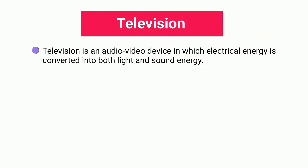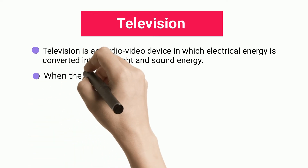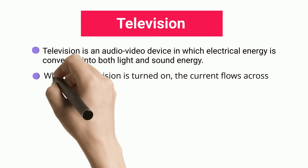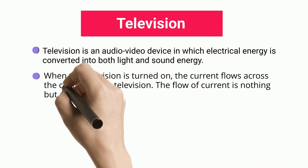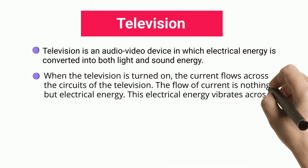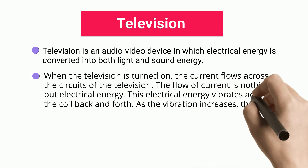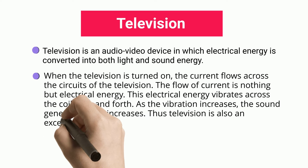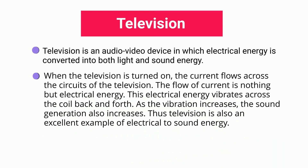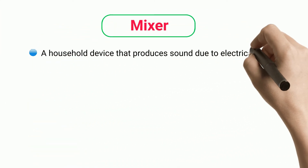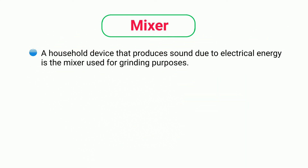Television is an audio-video device in which electrical energy is converted into both light and sound energy. When the television is turned on, current flows across its circuits. This electrical energy vibrates across the coil back and forth; as the vibration increases, the sound generation also increases. Thus television is an excellent example of electrical to sound energy conversion.